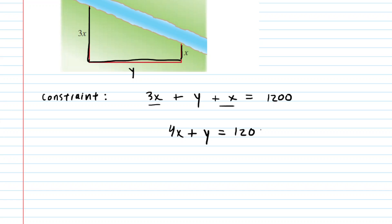Now, usually you want to solve your constraint for y, and we will see why we do that in just a moment. But we'll go ahead and solve for y right off the bat by subtracting 4x from both sides. So now we can see that y is going to equal 1,200 minus 4x.